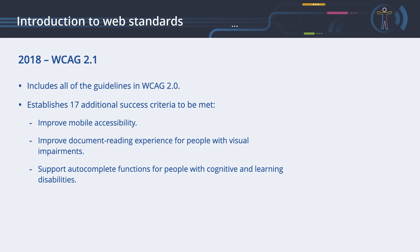WCAG 2.1. Technological development required an updated version 2.1 of the Web Content Accessibility Guidelines, which was published in 2018. Version 2.1 includes all of the guidelines in version 2.0 and establishes 17 additional success criteria. The key changes in this version are: to improve mobile accessibility — for example, do not change the content when rotating a mobile device, as many devices are permanently mounted on wheelchairs, and shaking should not be a required input for an application; improved document reading experience for people with visual impairments — a document should be readable without the need for horizontal scrolling, and a responsive design should make sure documents can be read using vertical scrolling only; and support auto-complete functions for people with cognitive and learning disabilities.